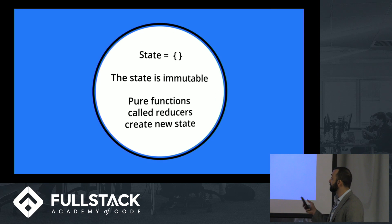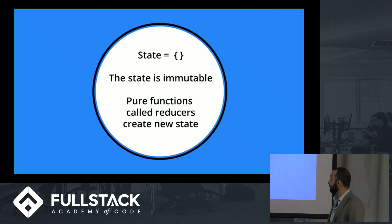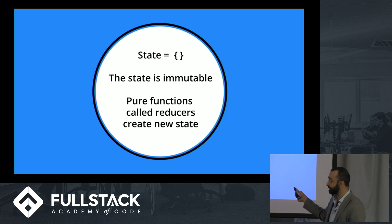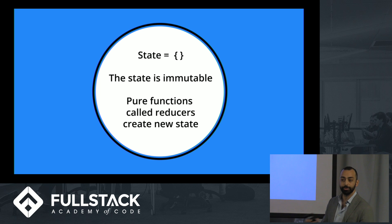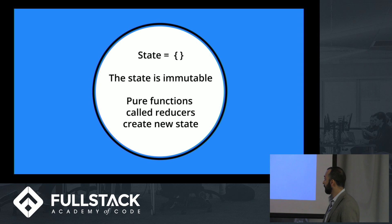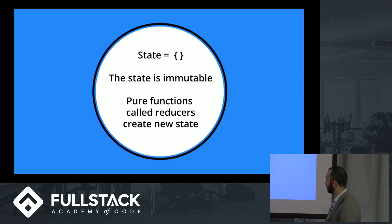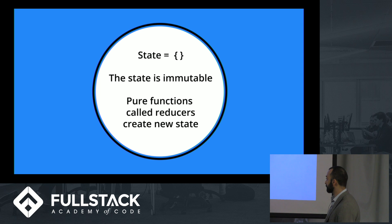There are three principles of Redux. One is that state is equal to an object. Two, that state is immutable — it can't be written to or modified, which is why you're constantly creating new versions of the state. And third, that pure functions called reducers will always create a new state for you.